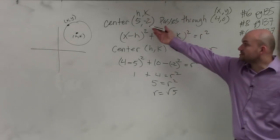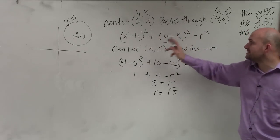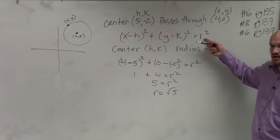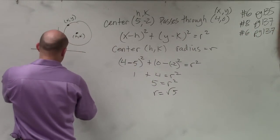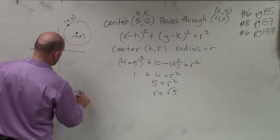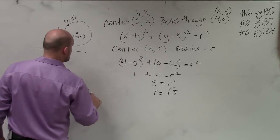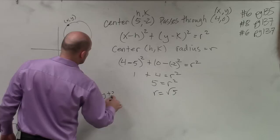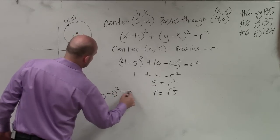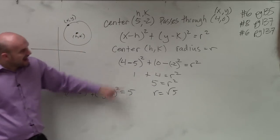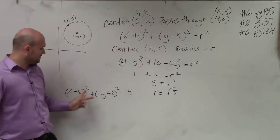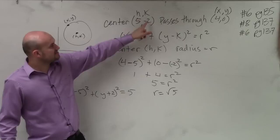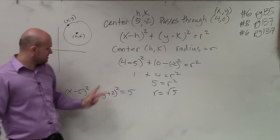So now that I know the center, can I plug those in for h and k? And now that I know what r squared is, can I plug that in? Yeah. And that's the equation of my circle. So therefore, I have (x - 5)² + (y + 2)² = 5. Notice how it's the opposite. It's opposite h, opposite k. Since h is positive, it's x minus h. Since k is negative, it's y plus 2, right?